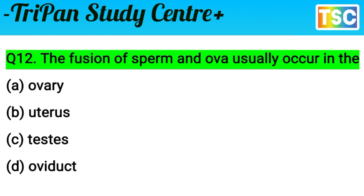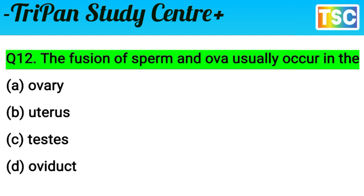The fusion of sperm and ova usually occurs — A) Ovary: incorrect. B) Uterus: not the correct answer. C) Testes: wrong. D) Oviduct is the correct answer. The fusion of sperm and ova usually occurs in the oviduct, so D option is correct.